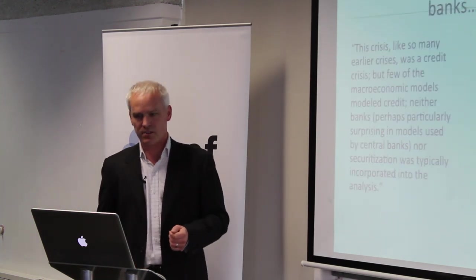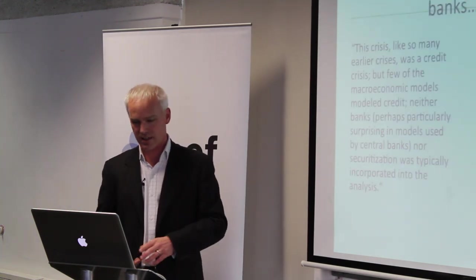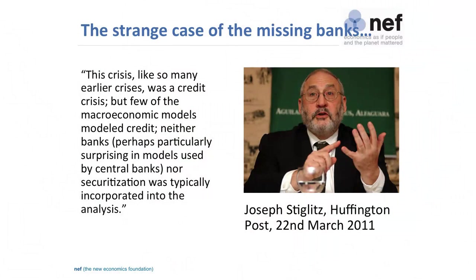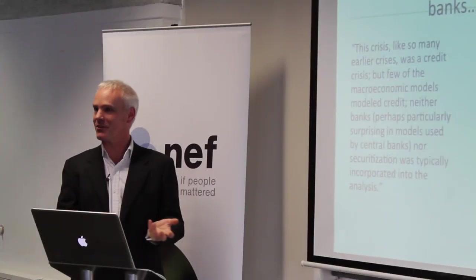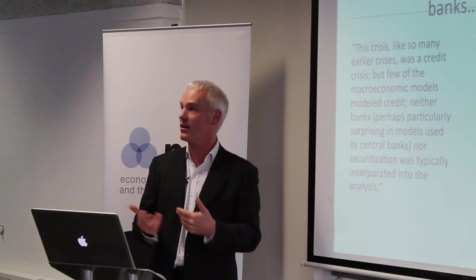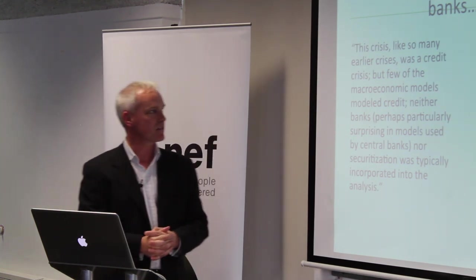The reason why this is so important is, as Stiglitz pointed out, that macroeconomic models were in the habit of — and still are — just excluding the banking system and money, because they assumed that the economy was basically a bartering system and you didn't need to put money in there. It's all Adam Smith's fault really. But those macroeconomic models were therefore blind to the build-up of credit crises.